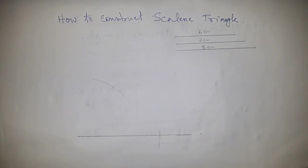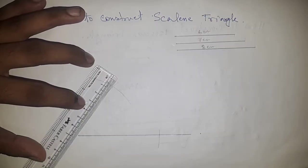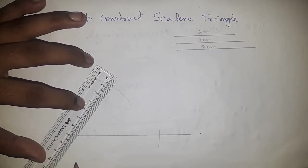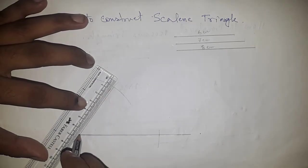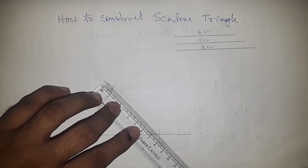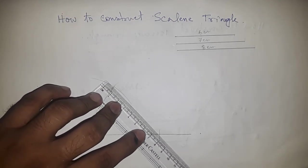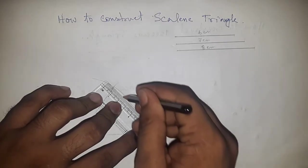Draw an arc which cuts the previous arc at a point. Now joining this point, and joining this to get our required scalene triangle.